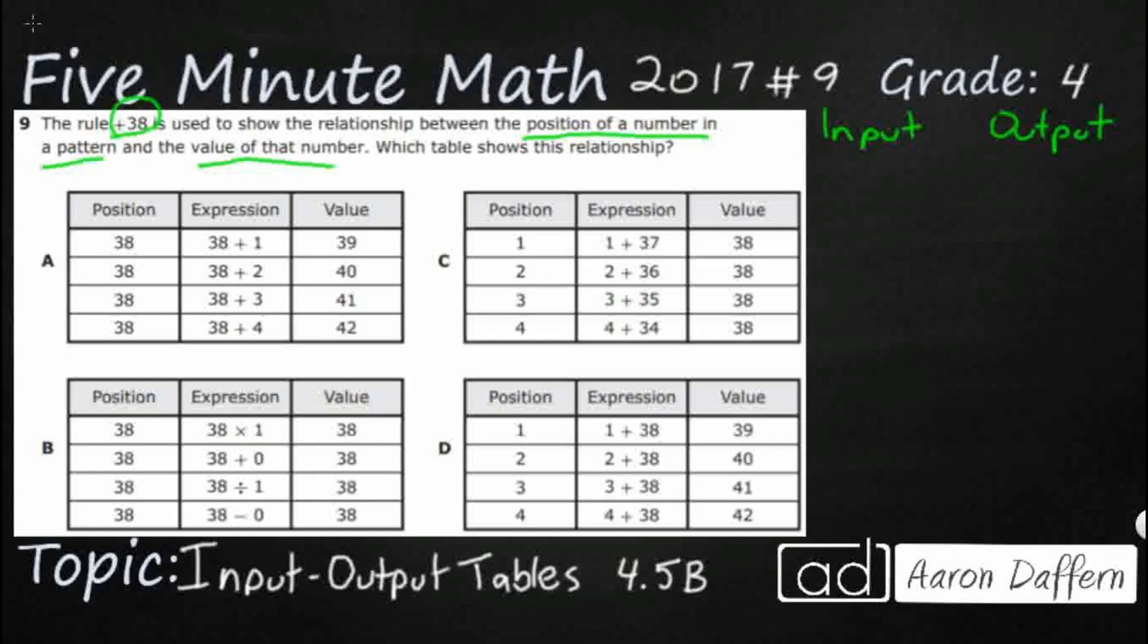The input is going to be the position of a number in a relationship. So, we'll say position and then the value of that number. If we're looking at our positions, typically they'll give us the input and they want us to find the output. I see two different sets here. I see 1, 2, 3, 4, and then I see 38, 38, 38, 38.